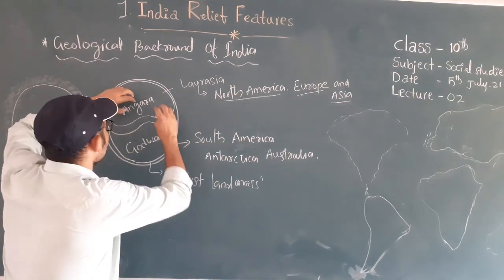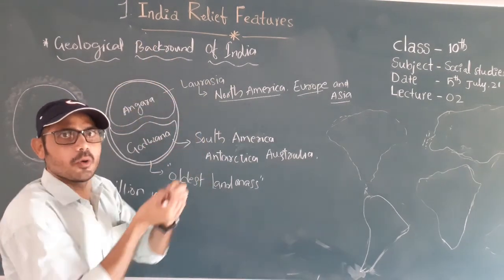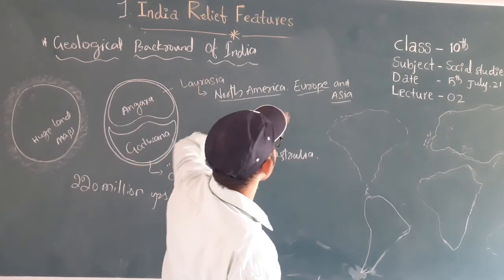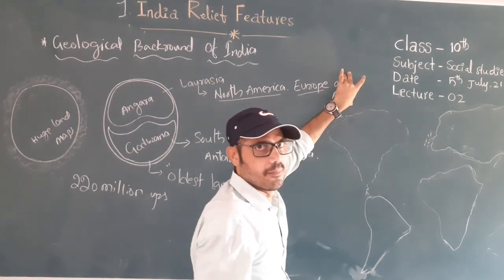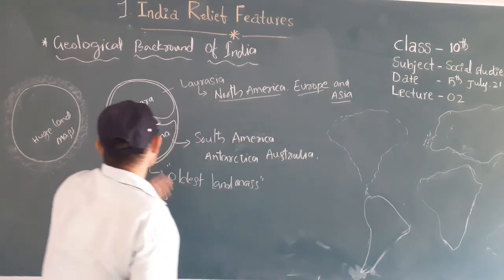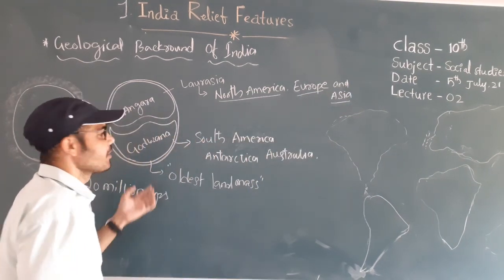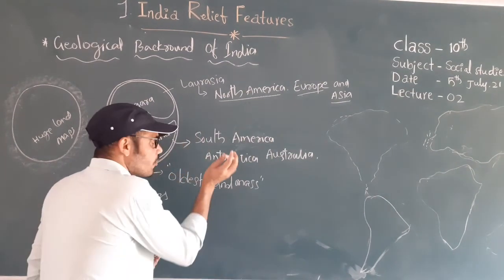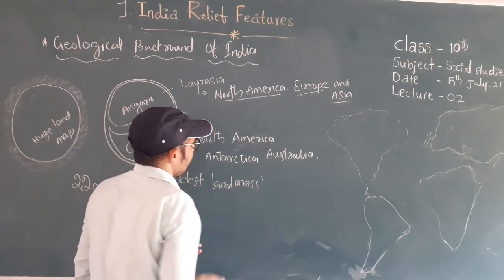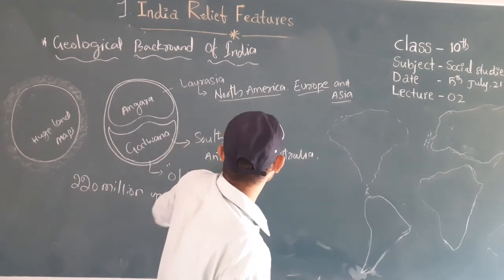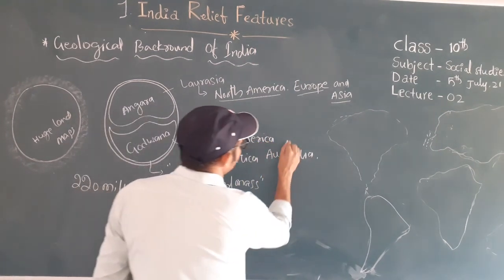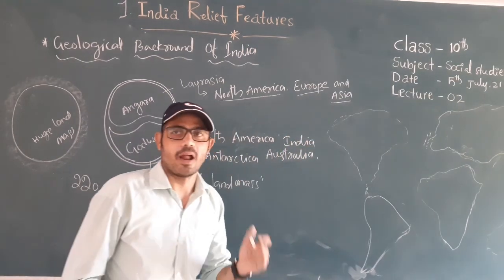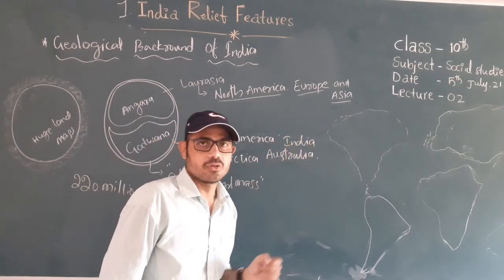Alfred Wegener displayed the continental drift theory. The Angara land split and moved, creating North America, Europe, and Asia. Similarly, the Gondwana land also split and created South America, Africa, Australia, Antarctica, and also the Indian peninsular landmass.